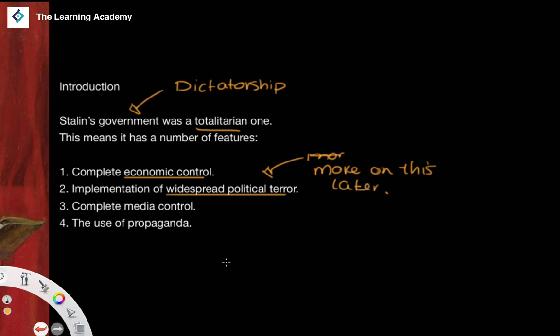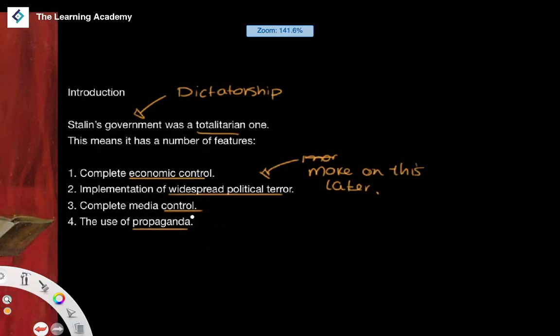As well as media control and the use of propaganda, there was effectively zero democracy. There were no kind of democratic incentives to do anything — there was nothing at all. It was a totalitarian dictatorship.